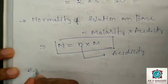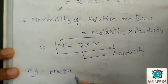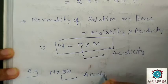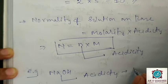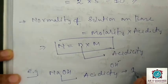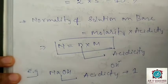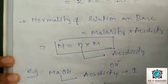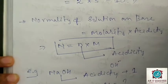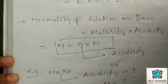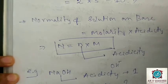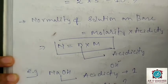Let's take an example: NaOH. Its acidity is 1 because it has only one displaceable OH group. If the normality of the solution is 2 and you need to find molarity M, use the formula N = n × M. Since n is 1 and N is 2, M is equal to 2.